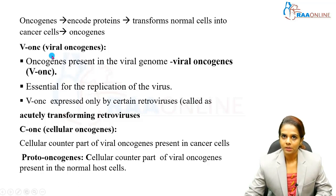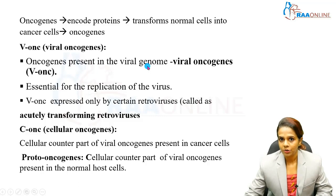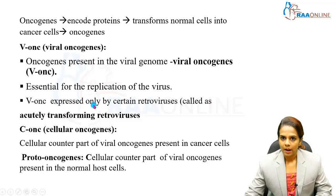There are three types of oncogenes: viral oncogenes (V-oncogenes), cellular oncogenes (C-oncogenes), and proto-oncogenes. Viral oncogenes are present in the viral genome and are responsible for replication of the virus. This viral oncogene is expressed only by certain retroviruses, called acutely transforming retroviruses.